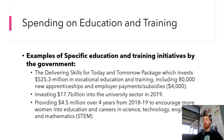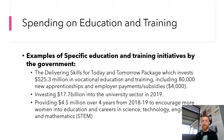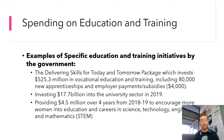The government is also investing $17.7 billion into the university sector in 2019, enabling universities to provide higher quality education and create better members of the workforce. Additionally, $4.5 million over four years from 2018-19 is being provided to encourage more women into education and careers in science, technology, engineering and mathematics — known as STEM. These initiatives are designed to get more women into areas that have been primarily dominated by men and improve overall workforce participation.